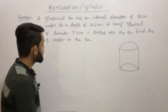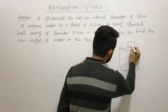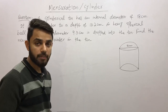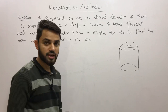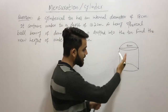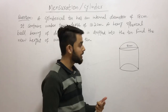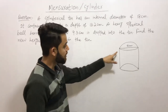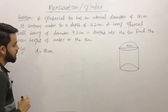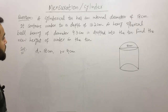The cylindrical tin has an internal diameter of 18 centimeters. A cylinder consists of two circles, and diameter is a key property of a circle. So the diameter of the cylinder is 18 centimeters. If we divide by 2, we get the radius, which is 9 centimeters.